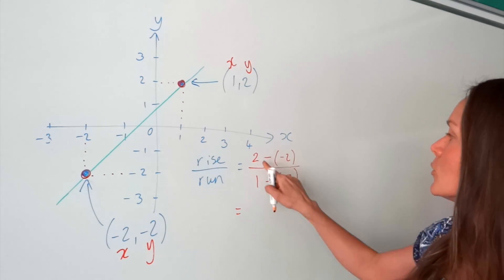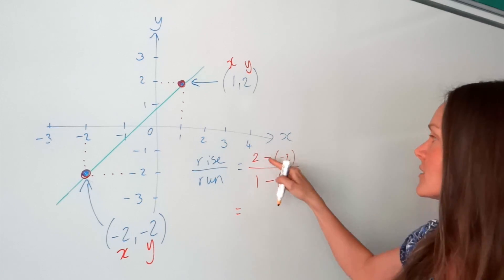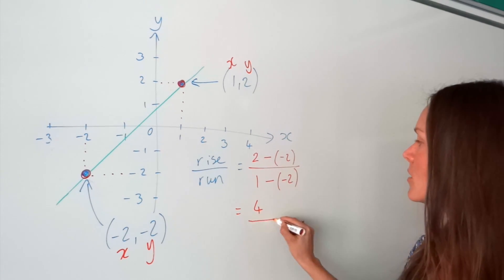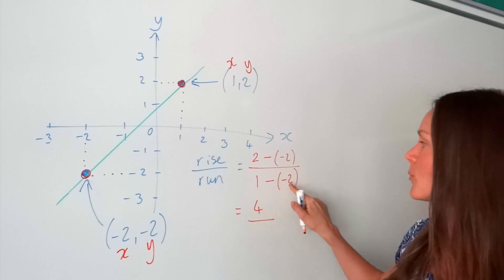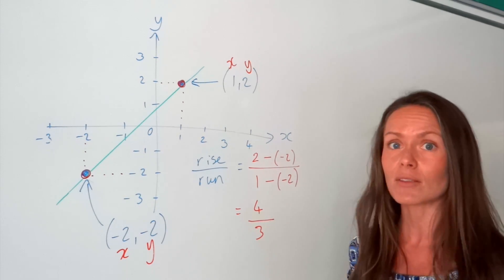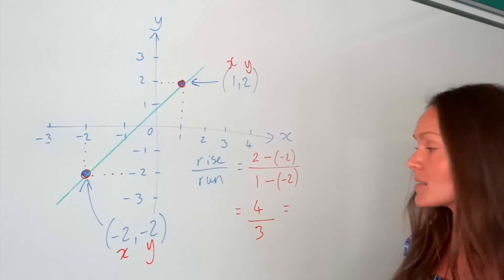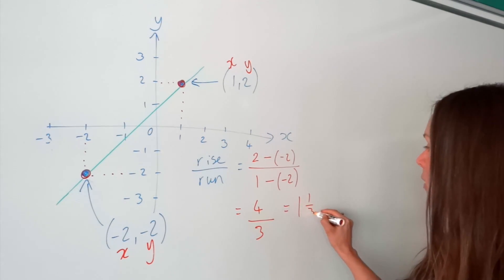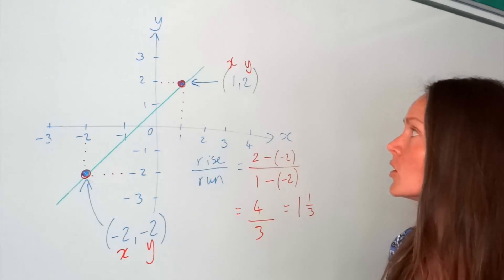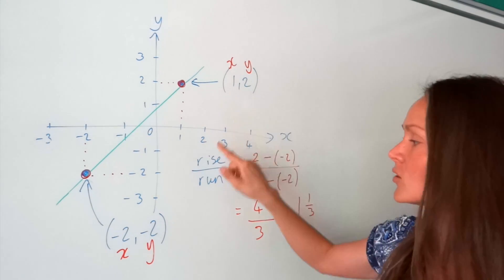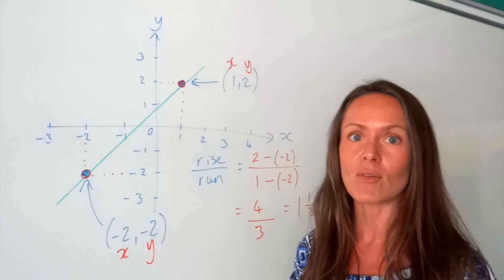Let's work that out. Two minus minus two — the two minuses turn into a plus, so that's two plus two, which is four. The same underneath: this double minus turns into plus, so one plus two is three. The gradient of that straight line is four thirds, or as a mixed number, one and one third. It's exactly the same method, except I had to identify the coordinates of two points on the straight line before calculating rise over run.